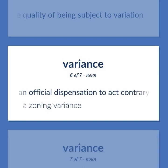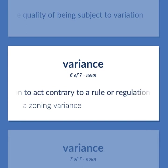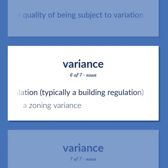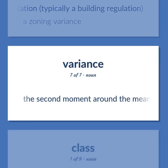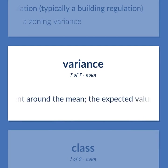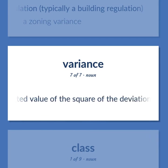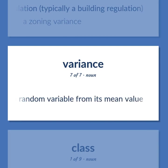The quality of being subject to variation. An official dispensation to act contrary to a rule or regulation, typically a building regulation — a zoning variance. The second moment around the mean — the expected value of the square of the deviations of a random variable from its mean value.